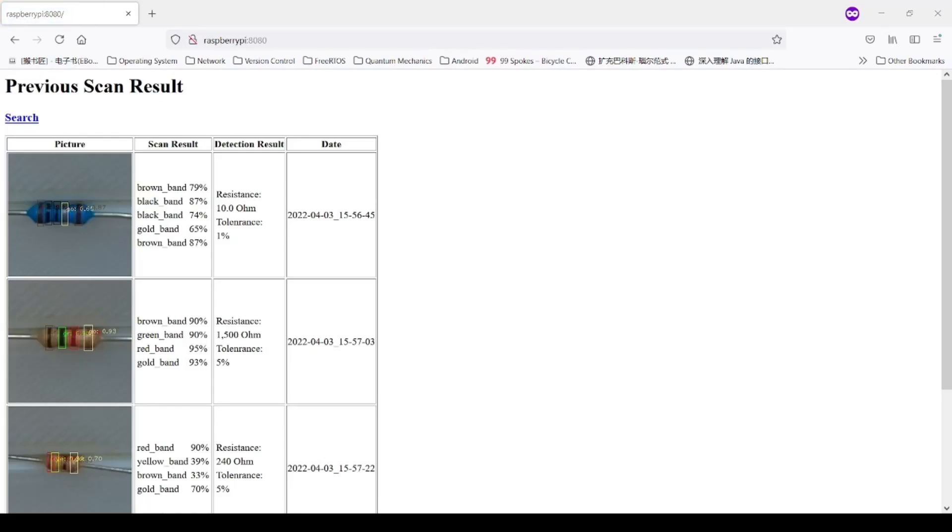As you can see, the history of successful detection results is shown on the page. I can read the resistance and tolerance of the resistors I just scanned. Also, I can check the detection screenshot, which is what ORIS sees and recognizes in the system.